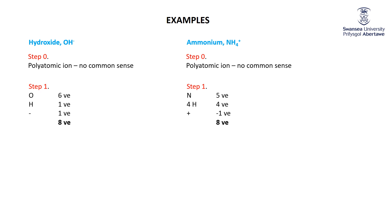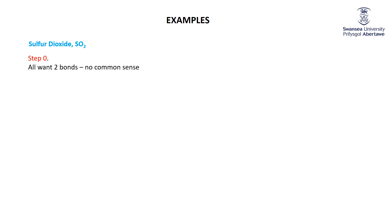It's going to get a bit more complicated. Sulfur dioxide, SO₂. Step zero: you could try to draw one, since all of these atoms are in group six with six valence electrons and all want two bonds — but the only way you could do it is a funky little triangle, and that doesn't obey common sense. So step one: sulfur has six valence electrons; two oxygens have twelve. We have 18 valence electrons in sulfur dioxide.